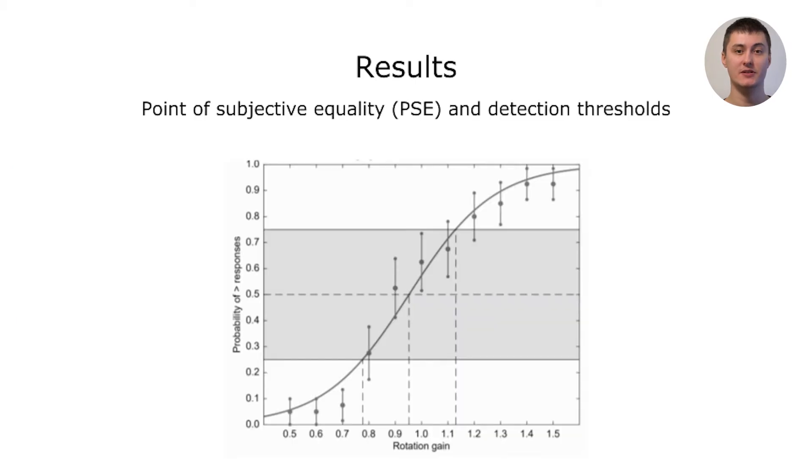For data analysis we used a similar method as previous works on detection thresholds, and here is an example of the data from one condition plotted into a psychometric function. For each condition we determined a point of subjective equality, denoted PSE, at which participants could not determine whether their virtual rotation was faster or slower than their physical rotation. The detection thresholds for gains smaller than the PSE were defined as where the participants responded faster in 25% of the trials, denoted DT low, and for gains higher than the PSE, defined as points where participants responded faster in 75% of the trials, denoted DT high.